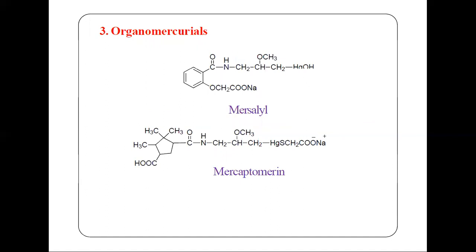The third class is organomercurials. These contain mercury. The first compound has mercury in the form of HgOH — this is called meralluride. The second compound is mercaptomerin, which has mercury in the form of HgS and is present as a sodium acetate salt.